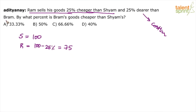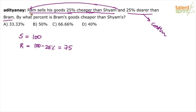And 25% dearer than Bram. Who sells 25% dearer than Bram? Ram. We always refer to the first person — whenever we use the word 'and' we refer to the first person. So basically it says Ram sells his goods 25% dearer than Bram, which means Ram equals Bram plus 25%.